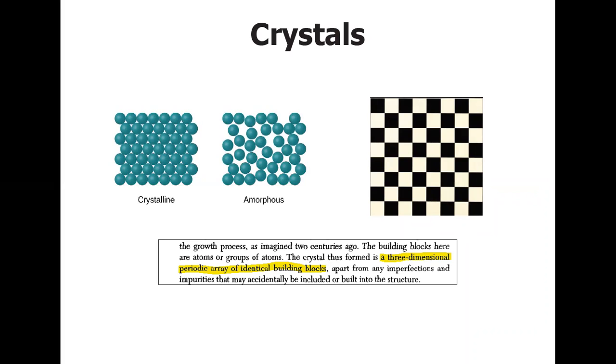The book Introduction to Solid-State Physics, written by Charles Kittel, originally published in the year 1953, describes crystals as being a three-dimensional periodic array of identical building blocks. These building blocks can take various shapes. For example, this image shows a 2D crystal made by a square building block. And evidently, just by observation, we can say that this is a periodic and an ordered structure.